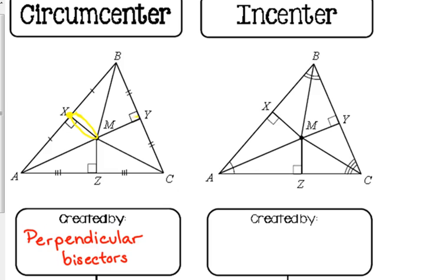YM is another perpendicular bisector — Y cuts side BC in half and is perpendicular to that side. ZM is the other perpendicular bisector; it cuts AC in half into two equal pieces and forms a right angle. All three of these perpendicular bisectors meet at point M, which is called the circumcenter.